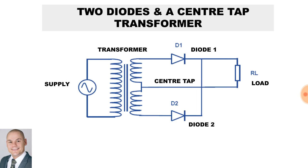Now we have a full-wave rectification circuit diagram using two diodes and a center-tap transformer. Diode 1 and diode 2 are 180 degrees apart and it will produce full-wave rectification. The center-tap acts as the common point between diode 1 and diode 2.